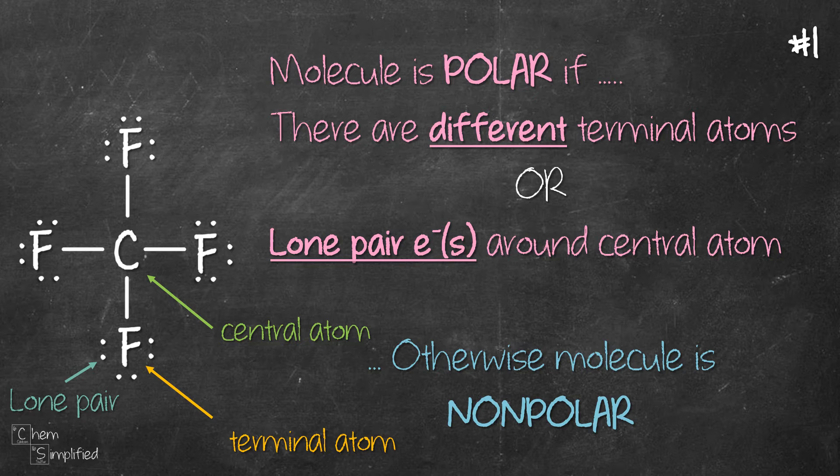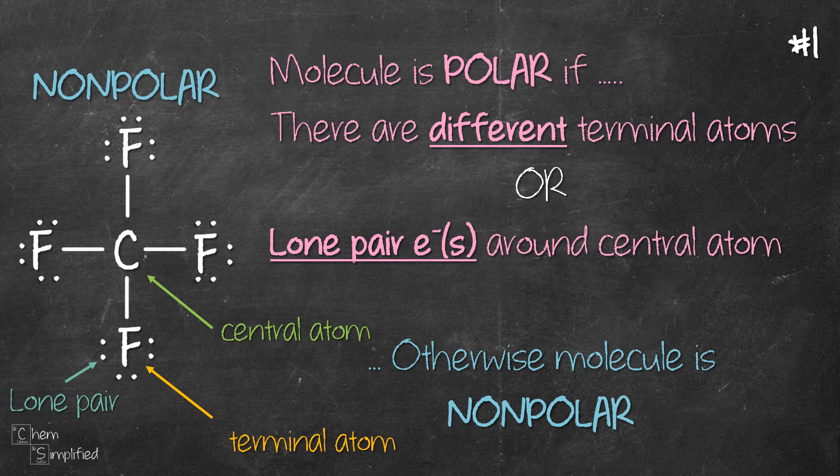So, are there different terminal atoms in CF4? Nope. All of our terminal atoms are fluorine. Therefore, they are the same. Alright, what about the next statement? Well, do you see any lone pairs surrounding carbon? Nope. Since both statements are not true, then CF4 is a non-polar molecule.